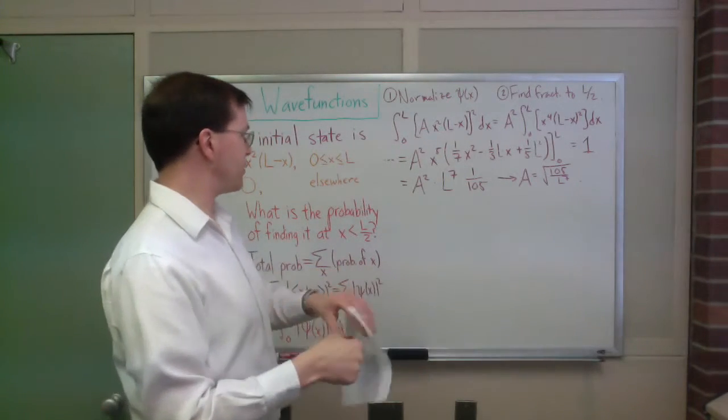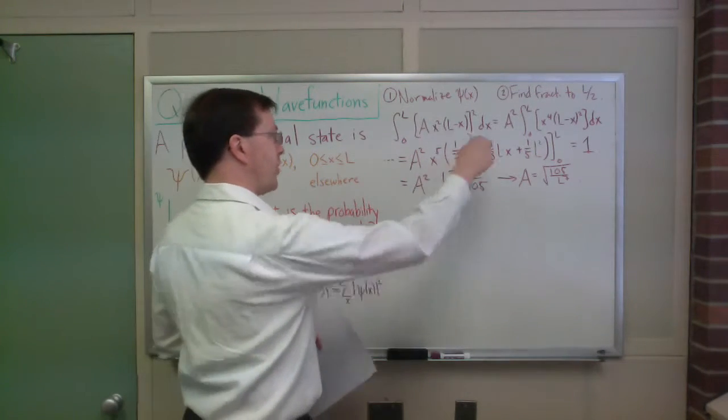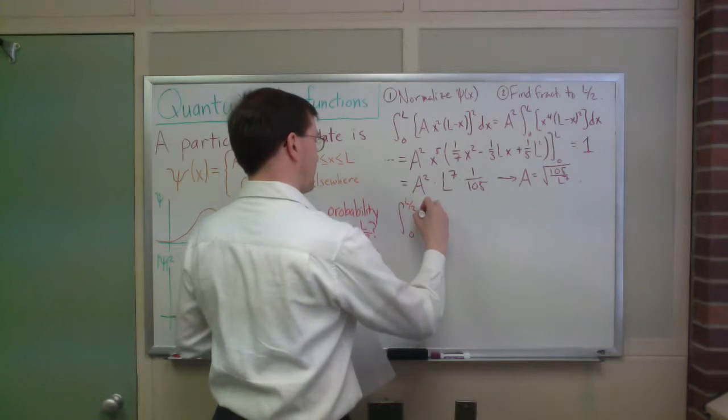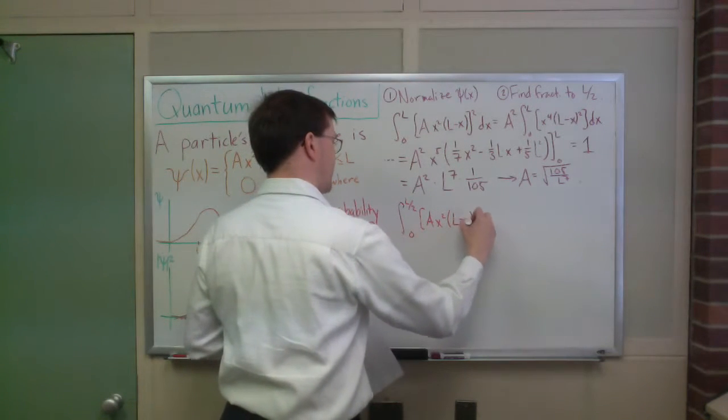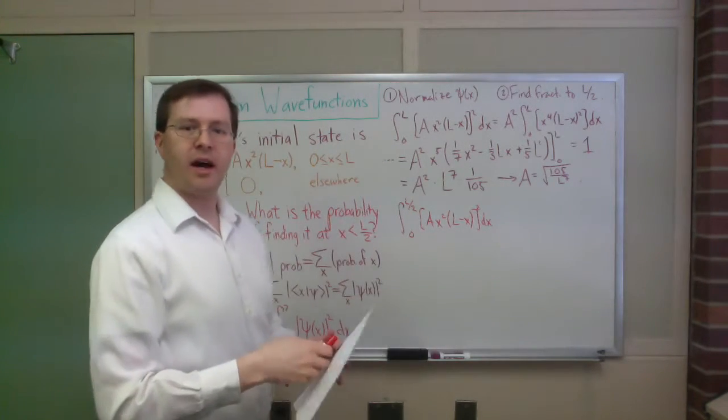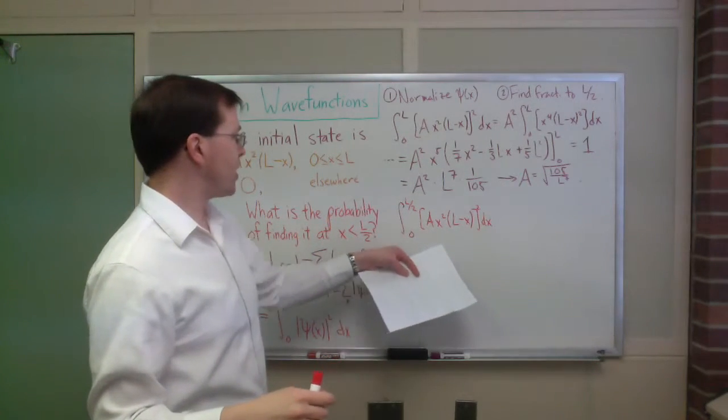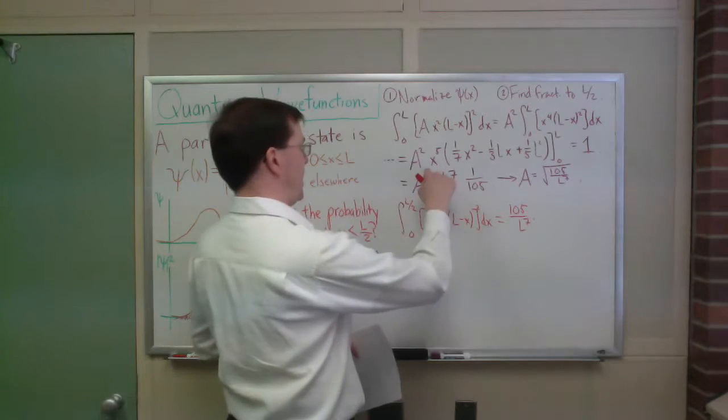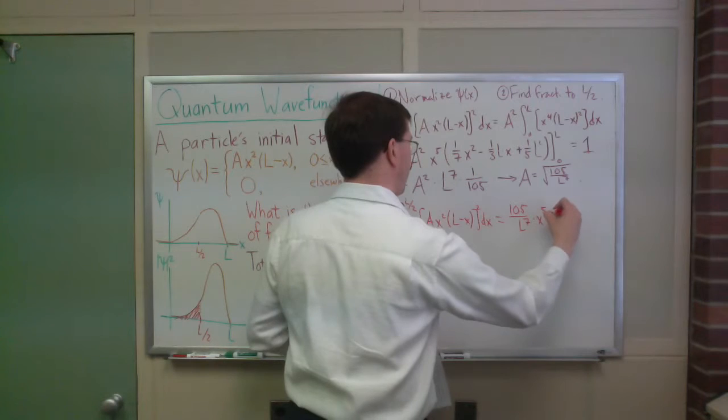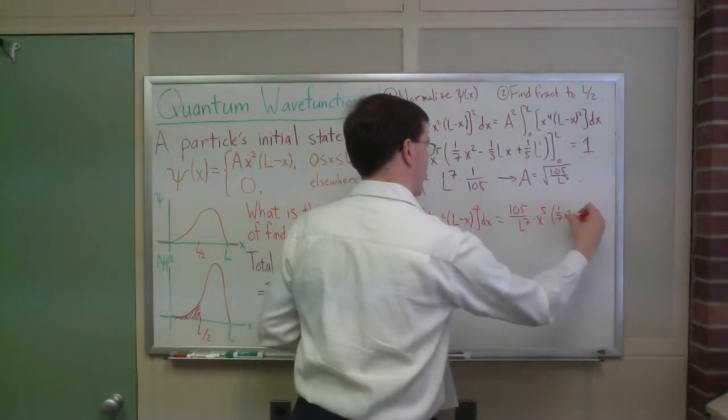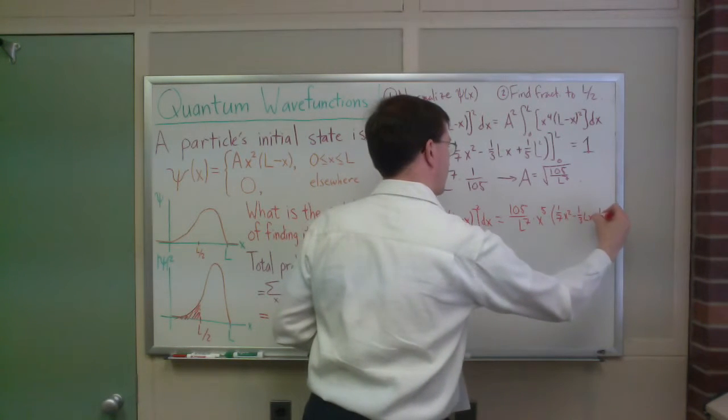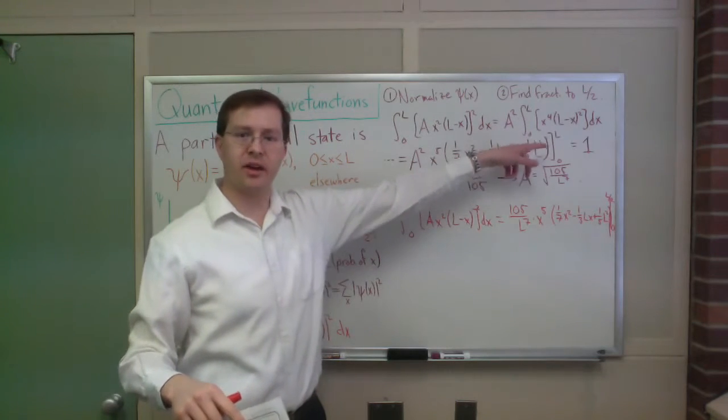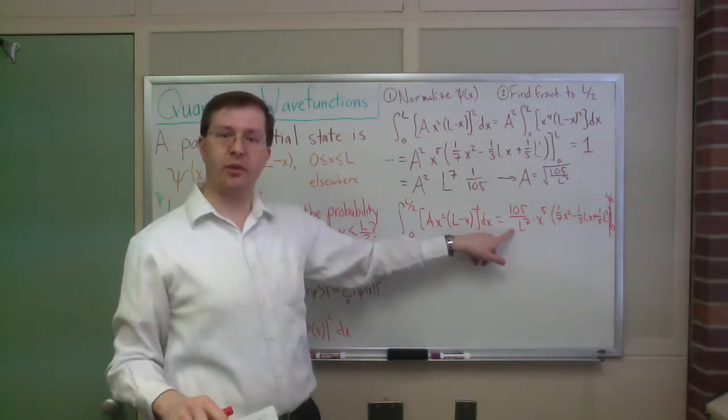And so if I were to plug that back in then, my step two, let me do step two in a slightly different color just to distinguish a little. So my step two then is to find my fraction going up to L over 2, the integral from 0 to L over 2 of A times x squared times L minus x dx, quantity squared. That integral, if I plug in my value of A, there's an A squared coming out here. That's going to be 105 over L to the seventh times x to the fifth times one-seventh x squared minus one-third L x plus one-fifth L squared from 0 to L over 2.